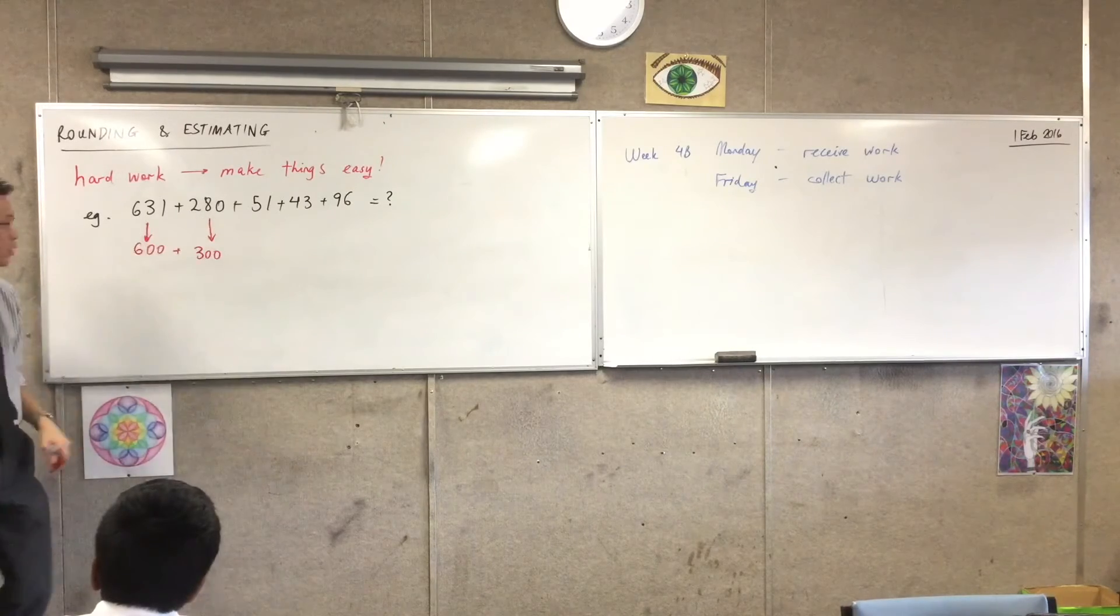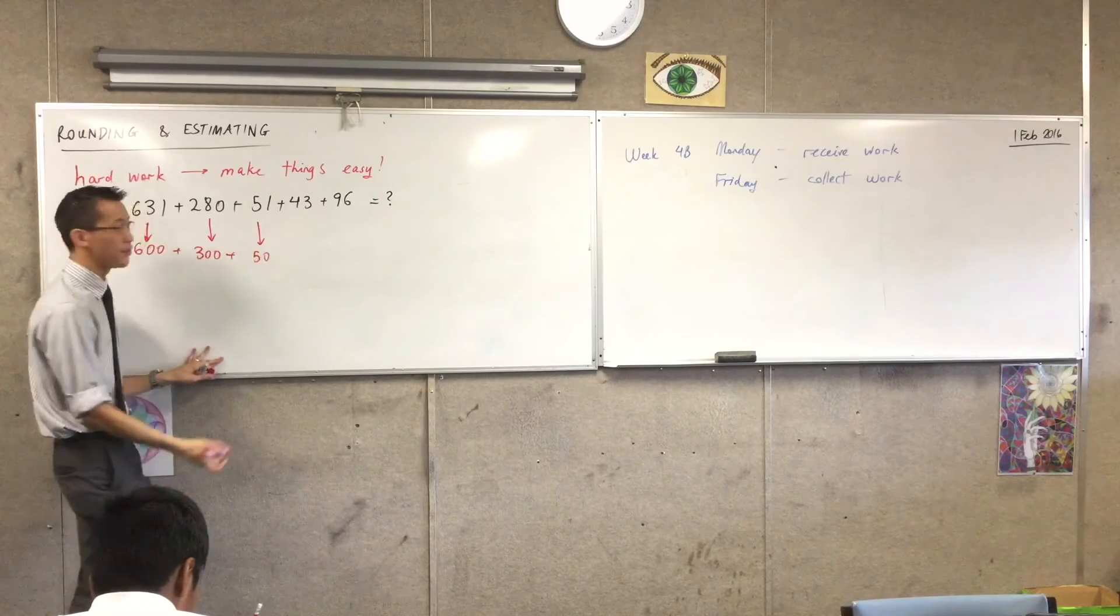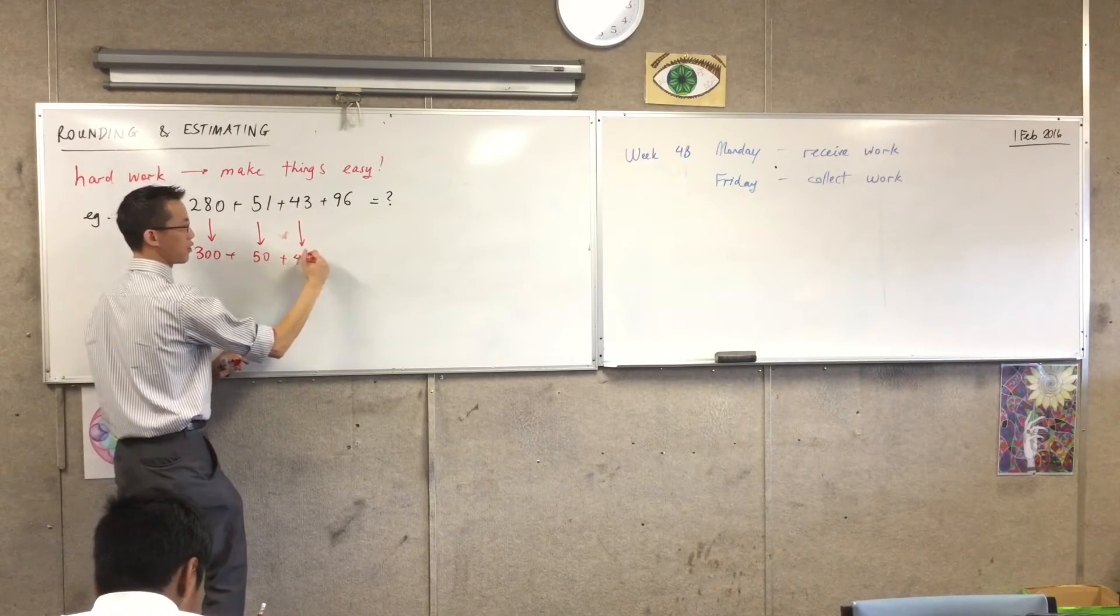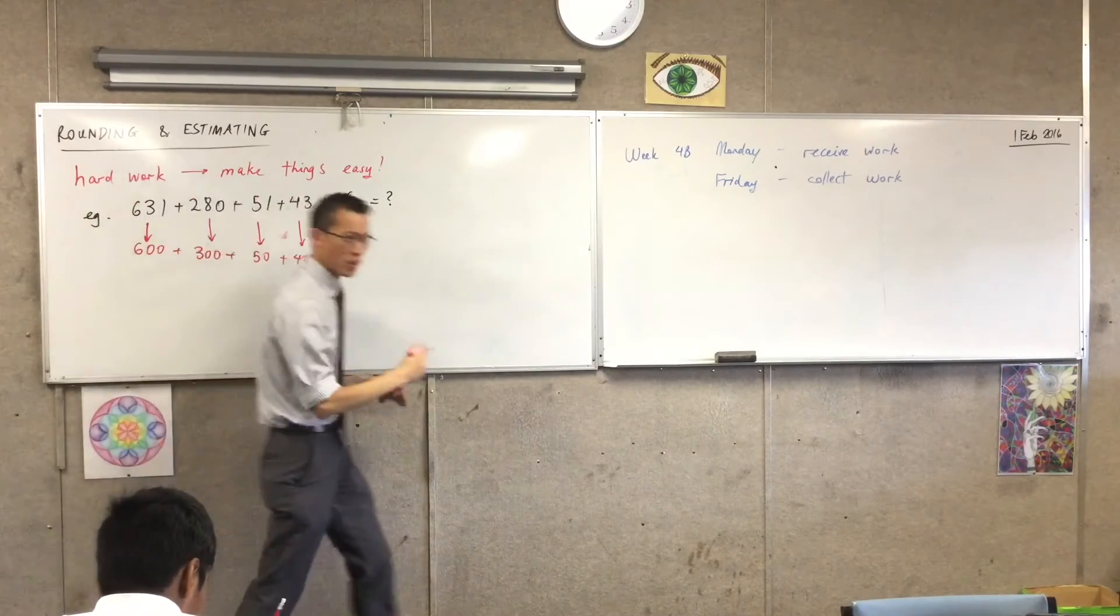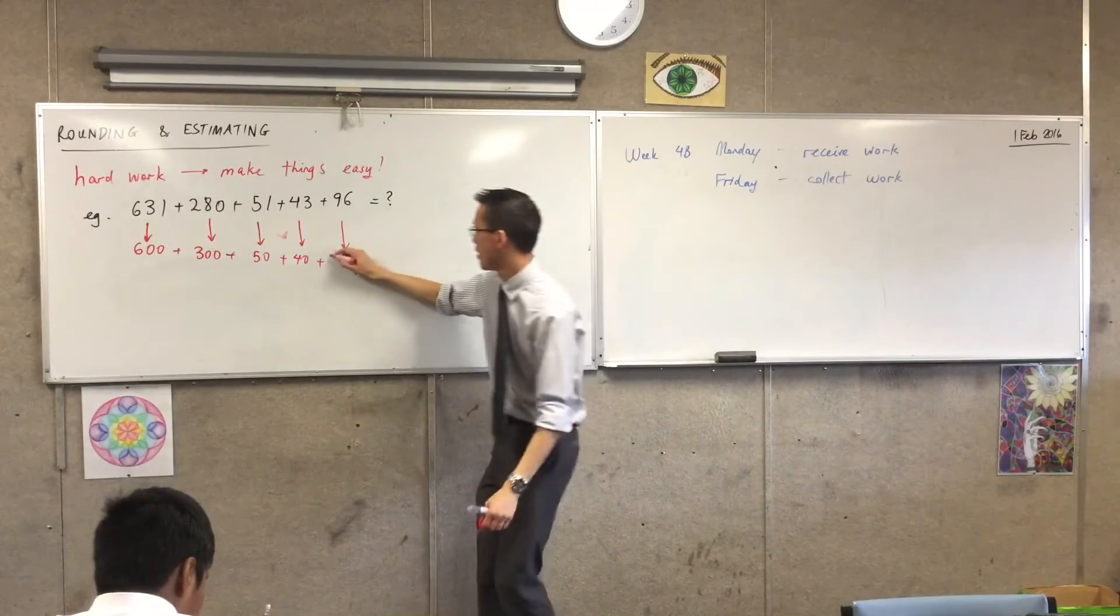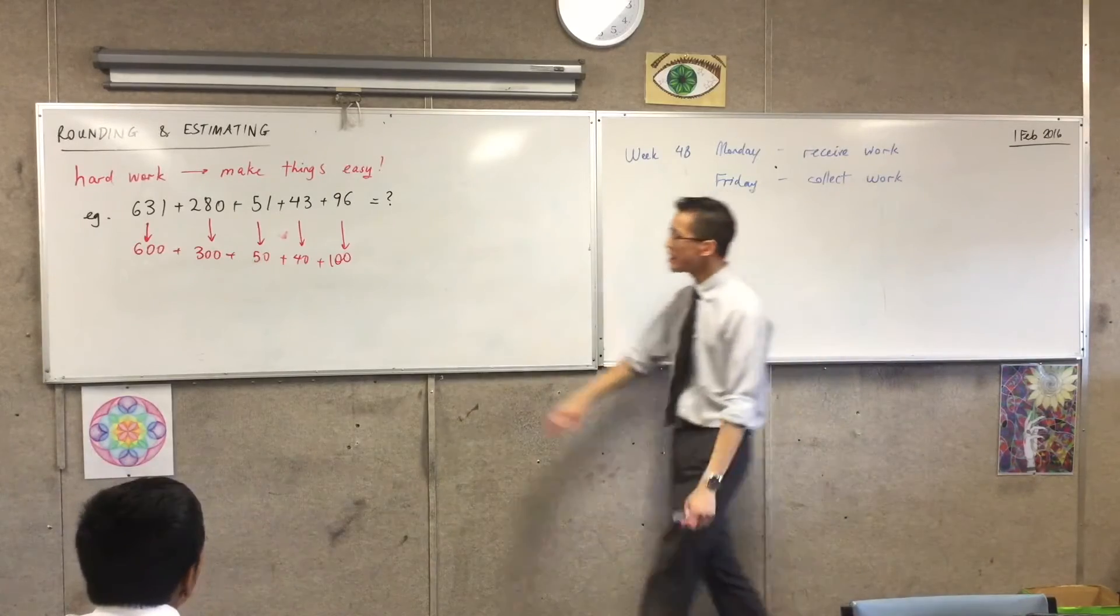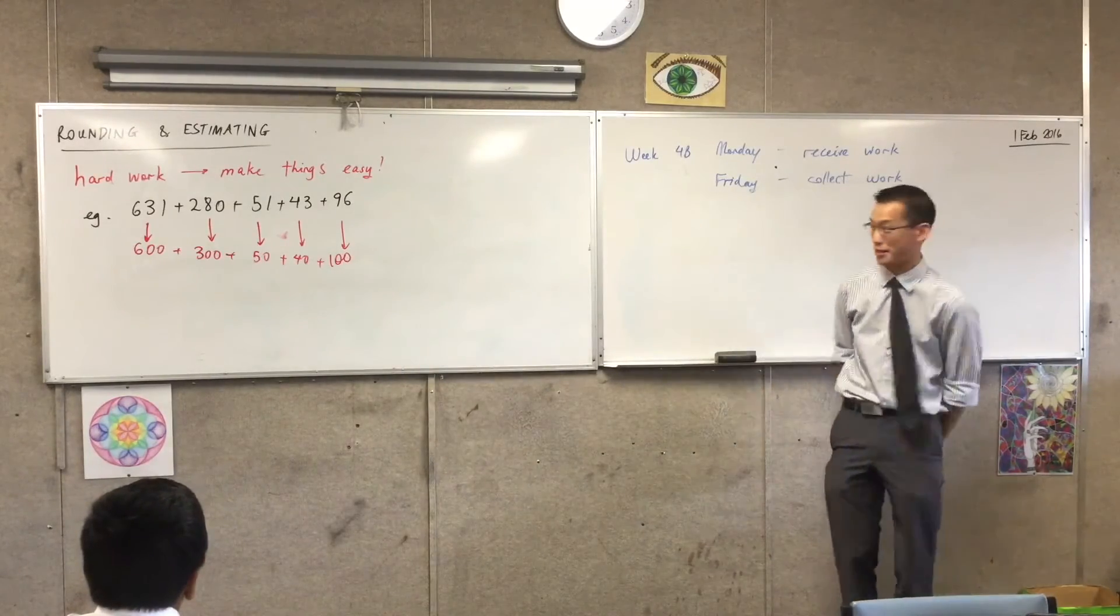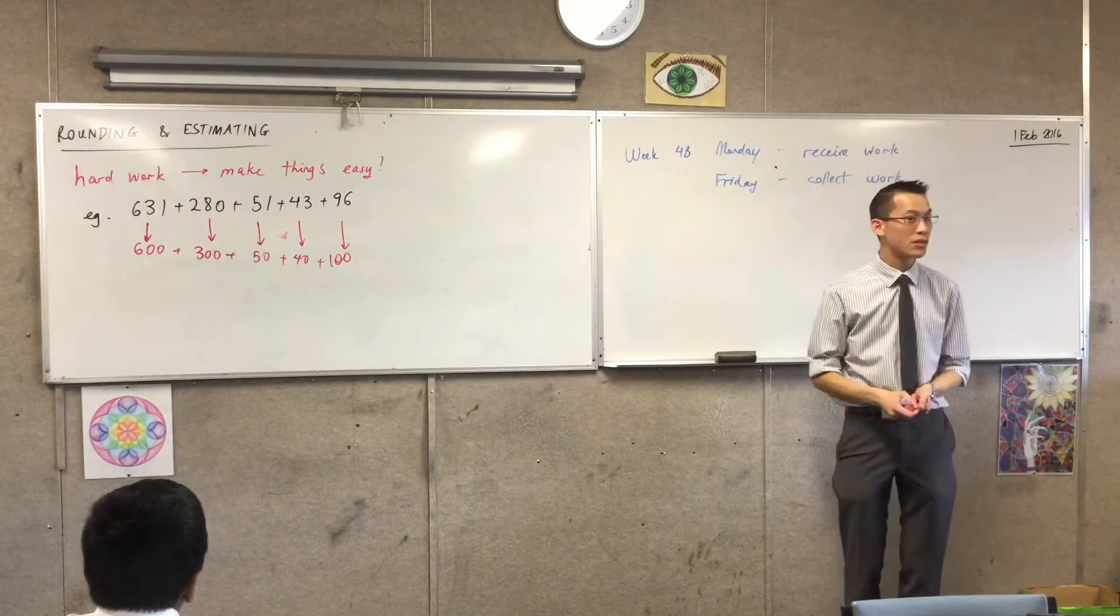I'll do the rest of the numbers a bit quicker. I think that this 51 is very, very close to 50. This 43 is very close to 40. And this last one, I don't know if you guys can tell me. What do you think 96 is close to? 100. 100. Yeah, perfect. I think that's outstanding, okay? Now have a look at this, okay? This set of numbers is not exactly equal to what we got in the first place. Obviously I've changed all the numbers. But they're still pretty close, okay?